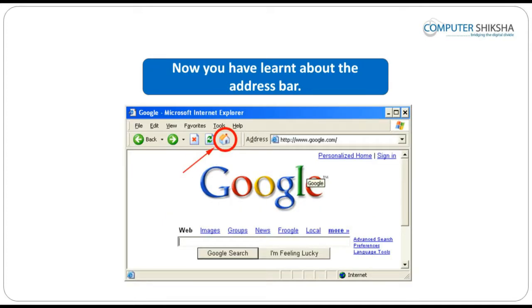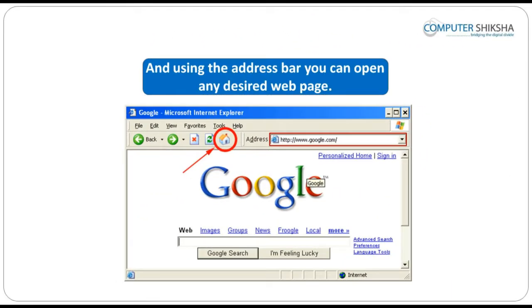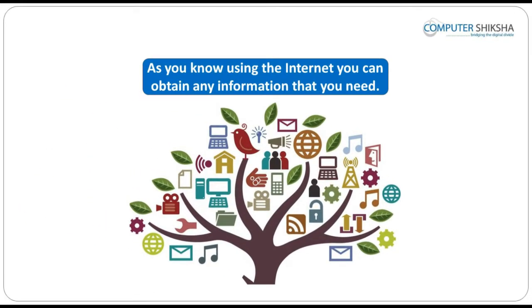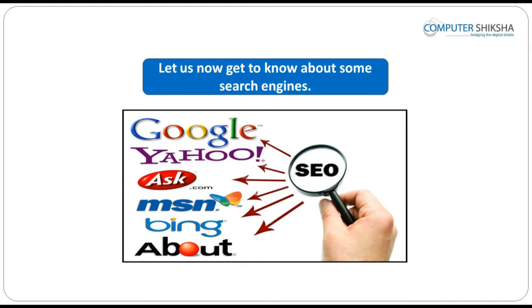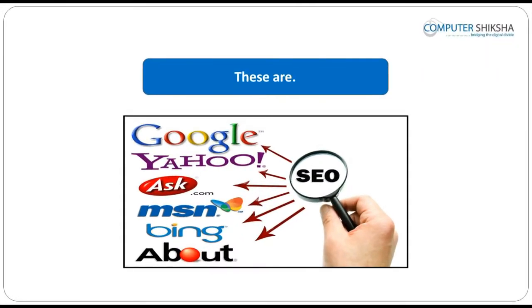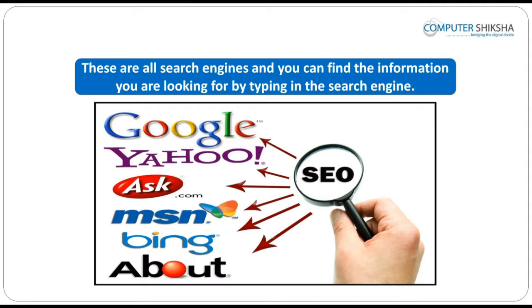Now you have learned about the address bar, and using it you can open any desired webpage. Using the internet, you can obtain any information that you need and search for any subject. You can get to know the news from all across the world. Let us now get to know about some search engines. These are Google, Yahoo, Bing, Baidu, etc. These are all search engines and you can find the information you are looking for by typing in the search engine.